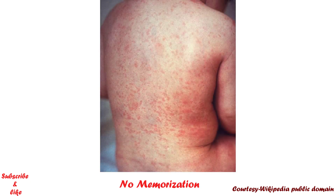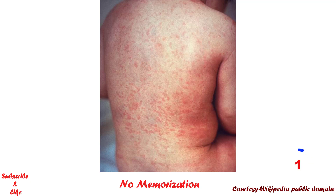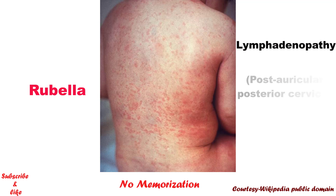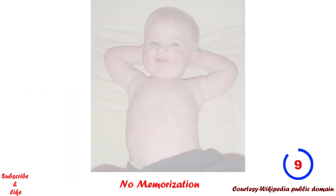Now let's move on to the next picture. Looks like measles too — quite similar, even in their presentation. But this is a picture of rubella. So here you need to take some help from the stem. The diagnosis will be rubella when you see a maculopapular rash with lymphadenopathy such as post-auricular or posterior cervical. Otherwise, only seeing the picture, it is not easy to differentiate between these two.